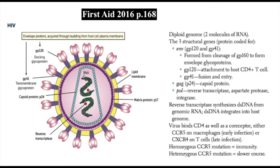Now let's discuss HIV. Remember that HIV has a diploid genome — there are two identical molecules of RNA. There are several clinically important proteins associated with HIV. P24 is a capsid protein. GP41 and GP120 are both on the surface of HIV. GP41 is involved in fusion and entry into the cell, and GP120 is involved in attachment to the host T cell.